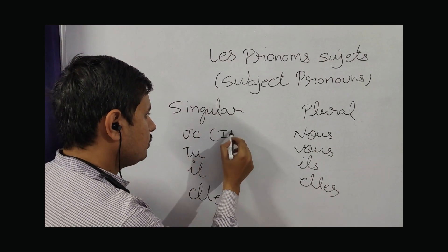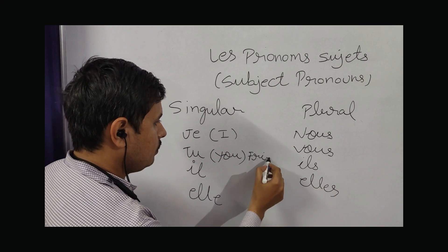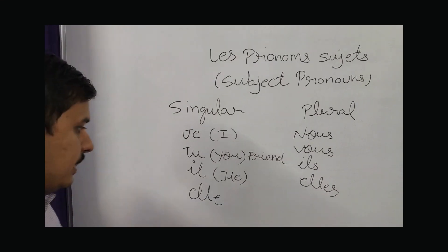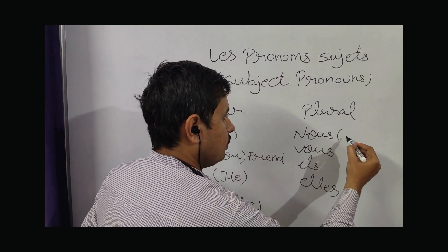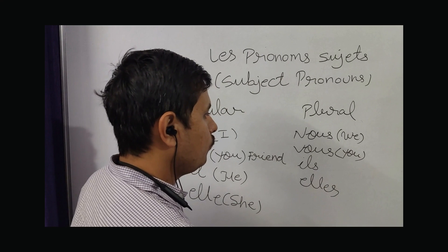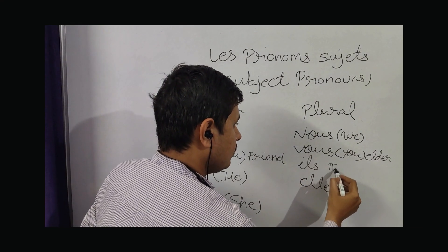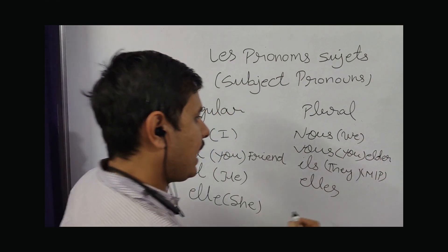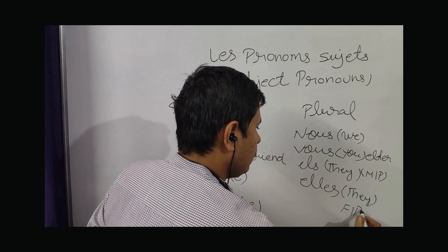Je is I, tu is you (for friends), il is he, elle is she, nous is we, vous is you (formal or plural), ils is they — masculine plural, elles is they — feminine plural.